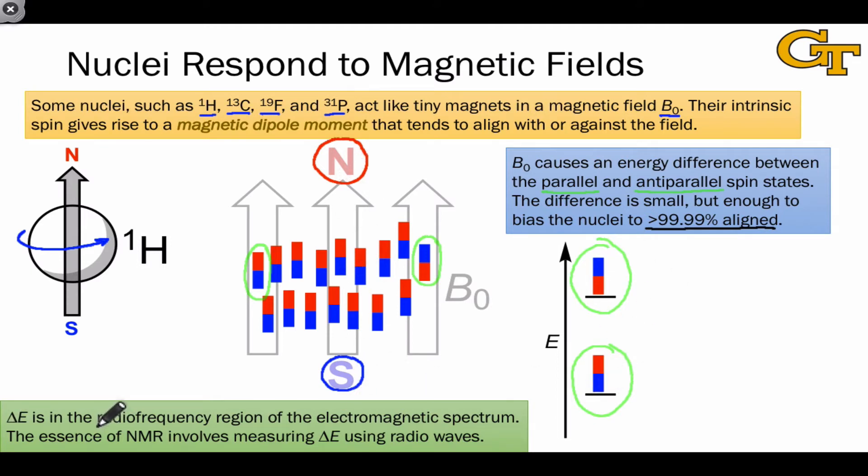Here's a representation of that. There are many more nuclei aligned this way than there are this way. And this energy difference is relatively small—that's one of the remarkable things about magnetic resonance. It's a very tiny effect in an energetic sense, but it's still large enough to bias the nuclei so that most of them, greater than 99%, are aligned with the external field in the parallel arrangement. This energy difference is so small that we find it in the radiofrequency region of the electromagnetic spectrum.